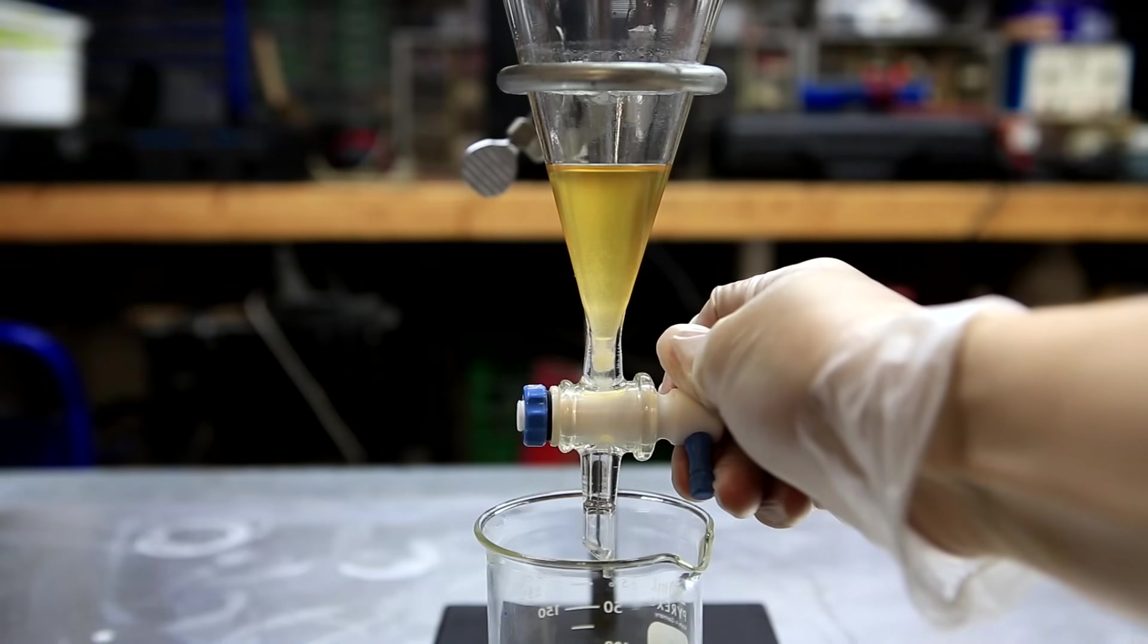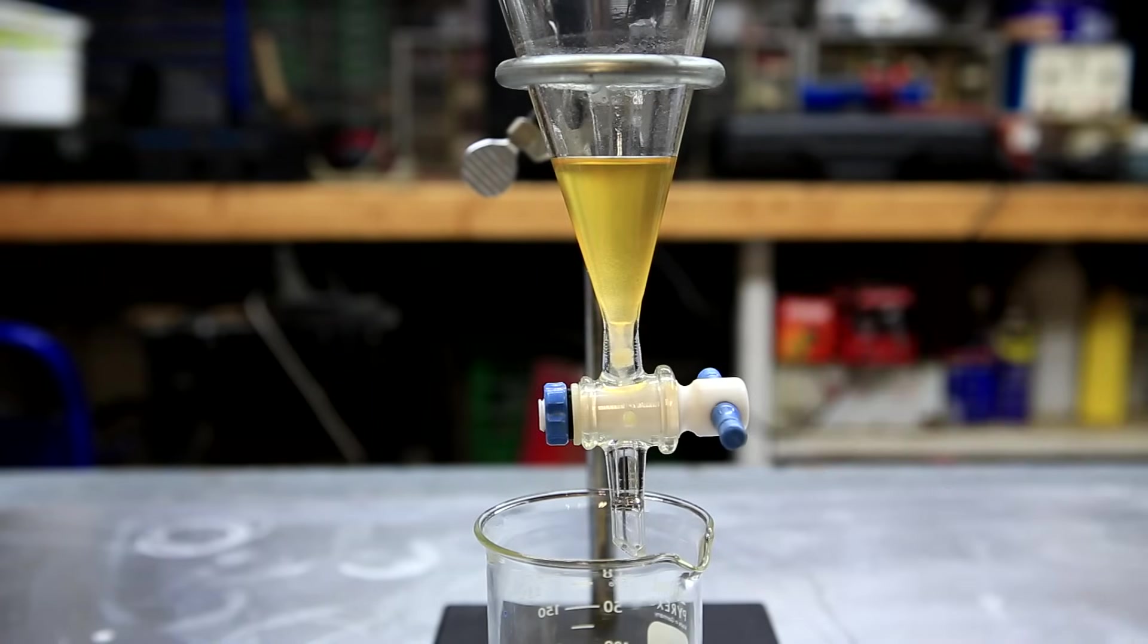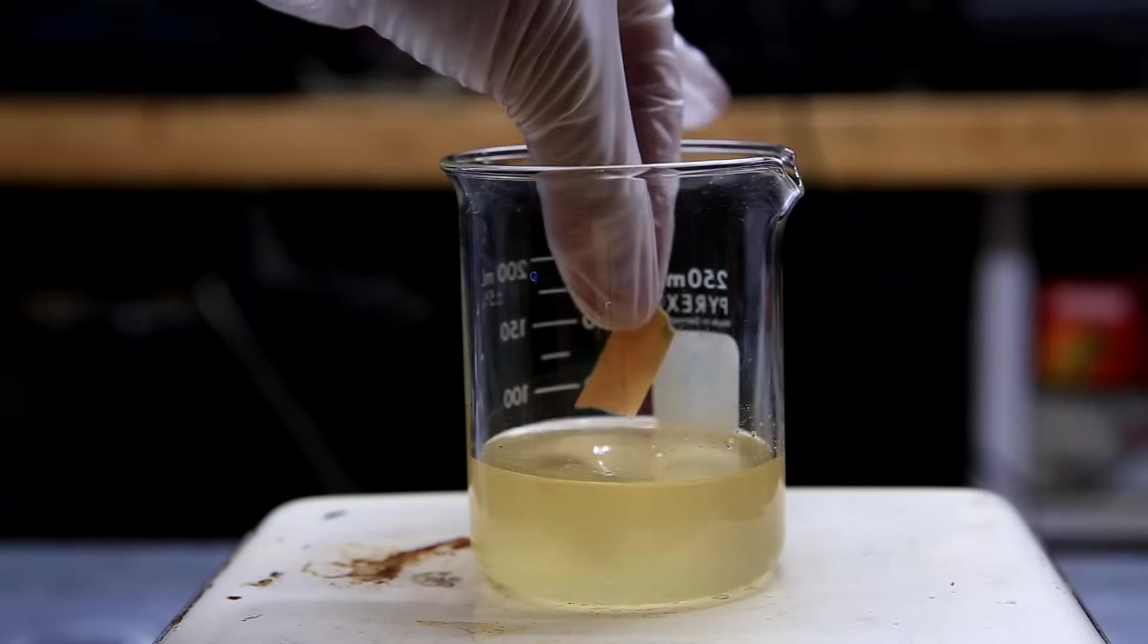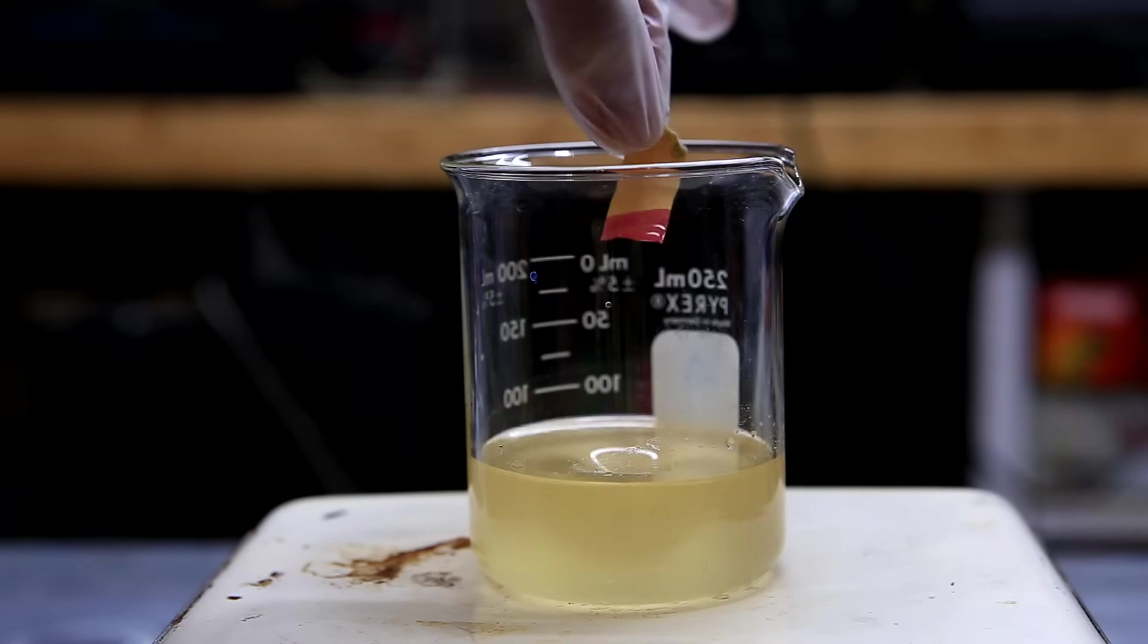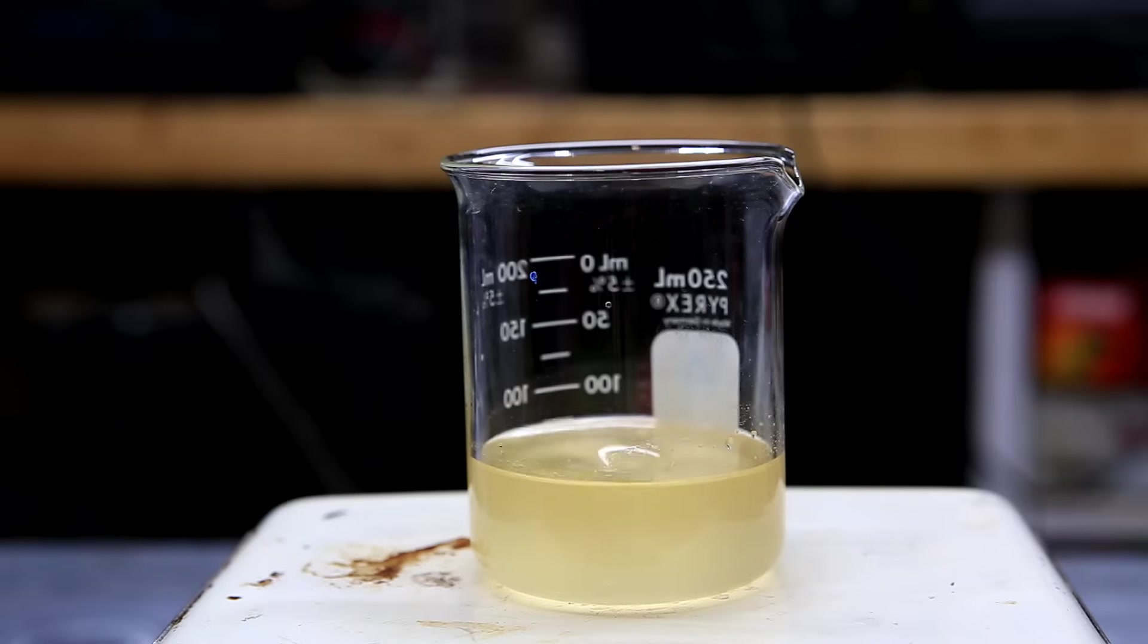My glycerin layer was a little bit cloudy because some of the salt from the beaker poured in. At this point, the pH of the solution was acidic, but we want the pH of the solution to be around that of glycerol which is around 7.